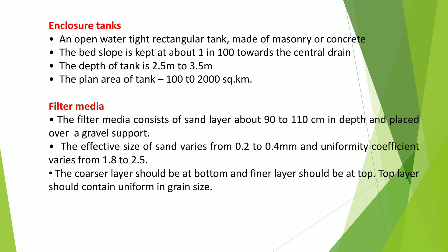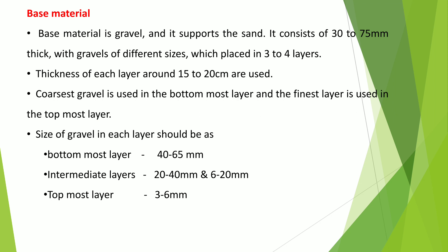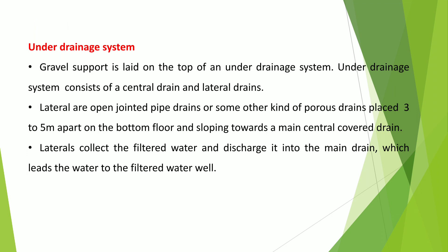The filter media consists of a sand layer about 90 to 110 cm in depth, placed over a gravel support. The effective size of the sand varies from 0.2 to 0.4 mm, and the uniformity coefficient varies from 1.8 to 2.5. The coarser layer should be at the bottom and the finest layer at the top, with the top containing uniform grain size.